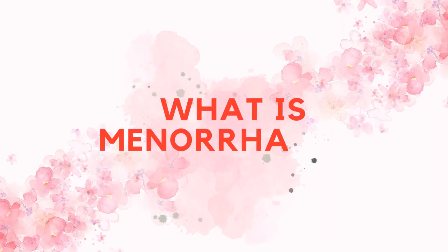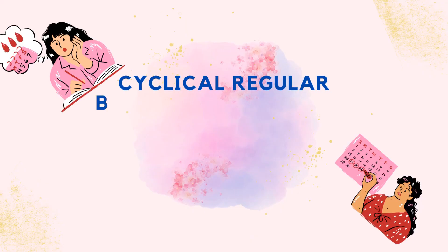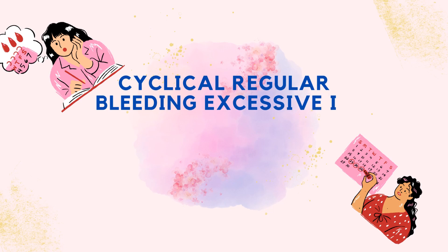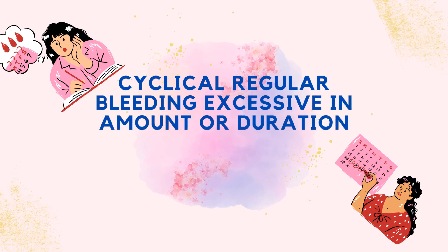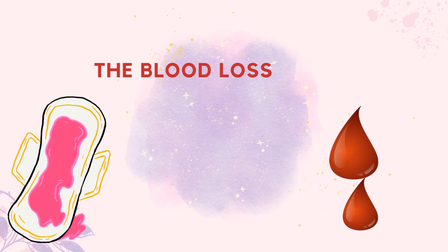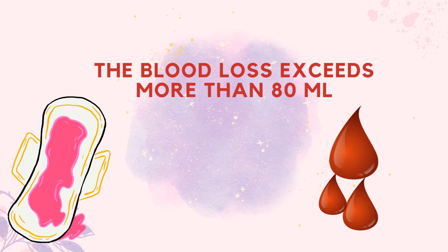Let us talk about menorrhagia today. Menorrhagia denotes cyclic regular bleeding which is excessive in amount or duration. In simple words, it means excessive menstrual bleeding. The normal menstrual blood loss is 50 to 80 ml and does not exceed more than 100 ml, but in menorrhagia there is blood loss more than 80 ml.